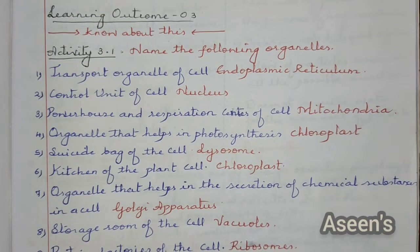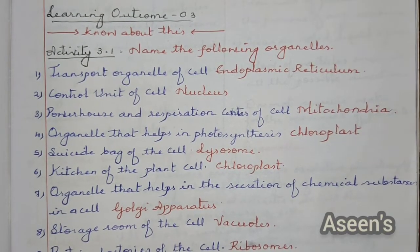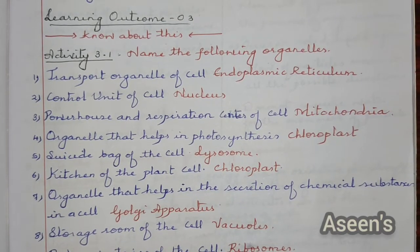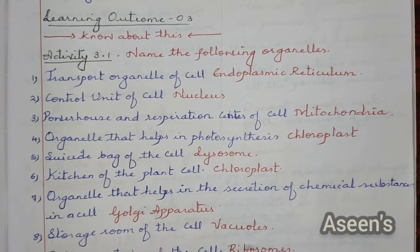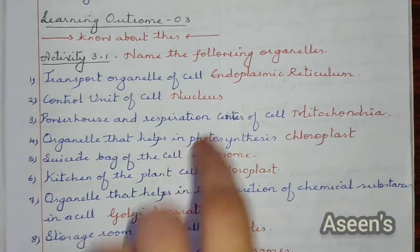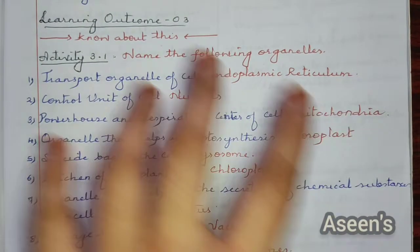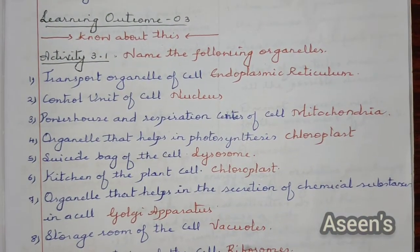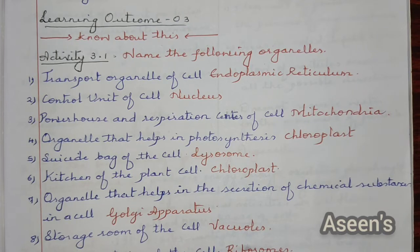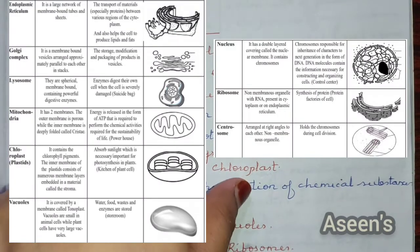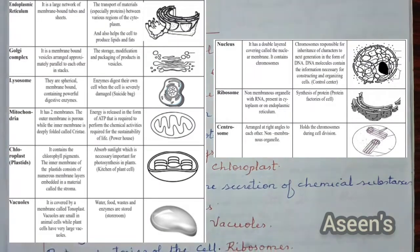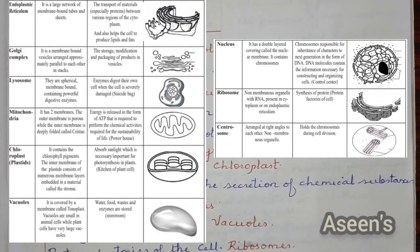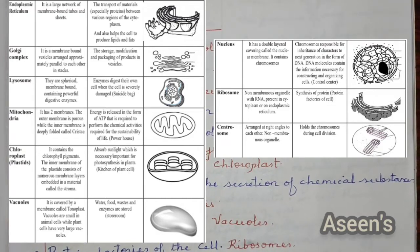Hello everyone, welcome back to Essenes. In today's video, let's discuss the remainder of the Kalika Chetrika worksheets for the fundamental unit of life, Class 9 Science. Let's start with learning outcome 3. The very first thing is the study material, as you can see here on the screen.